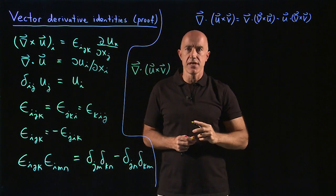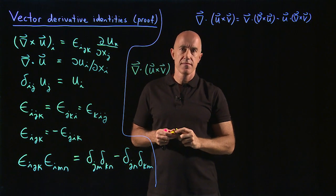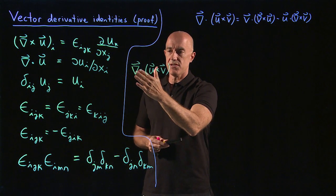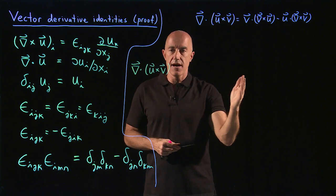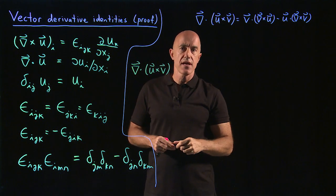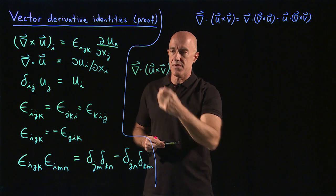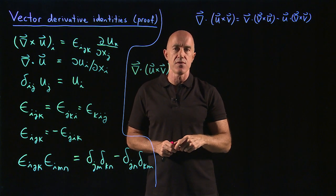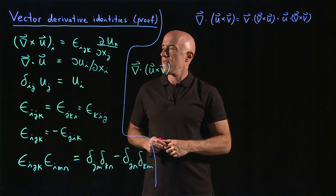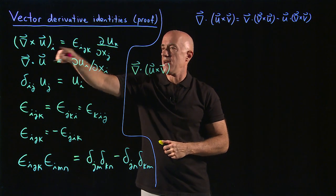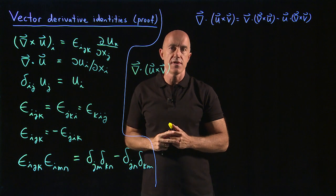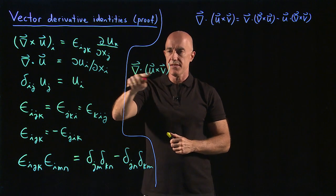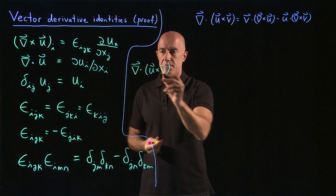So del dot (u cross v). This expression is a scalar. So we can just write this as the scalar, as one number. If you were proving a vector identity that was a vector, then you would have to look at the i-th component and prove it for the i-th component. But this is a scalar, so we can continue.